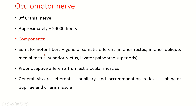Components: somatomotor fibers — these are the general somatic efferent fibers which supply the inferior rectus, inferior oblique, medial rectus, superior rectus, and levator palpebrae superioris. These are five muscles out of the seven extraocular muscles. The other two muscles — superior oblique and lateral rectus — are supplied by the trochlear nerve and abducent nerve respectively.